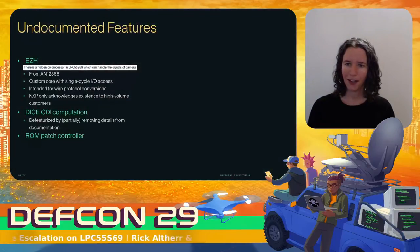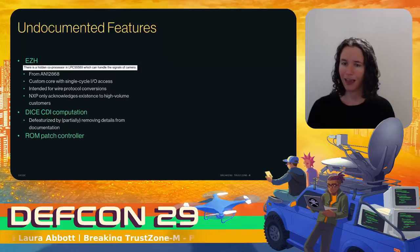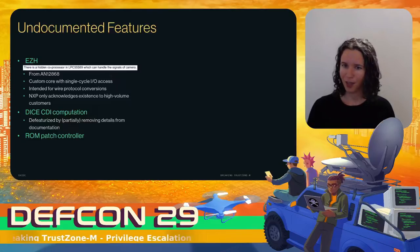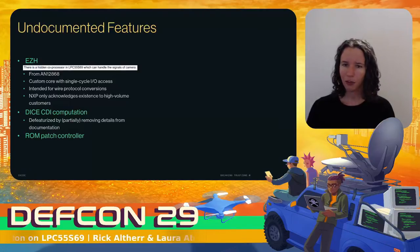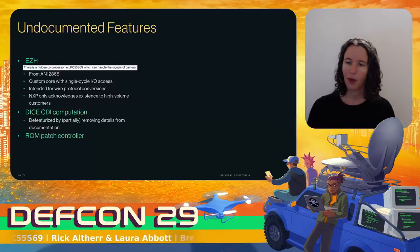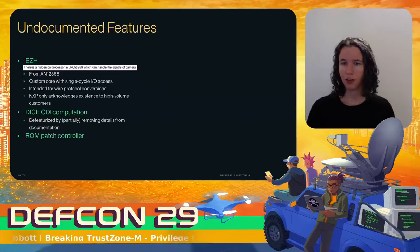We continued to run into surprises while reading the documentation. As part of our due diligence we were reviewing all the application notes. I found one labeled 'camera interface in LPC-55' which was very surprising given the manual did not mention a camera hardware block. The application note contained the line: 'there is a hidden coprocessor in LPC-55-S69 that can handle the signals of a camera.' When I mentioned this to my colleagues they thought I was joking, because a hidden coprocessor sounds like a bad idea in a chip that's supposed to be secure. We had to ask NXP for details — they usually don't give out this information unless you're a high volume customer.